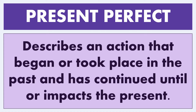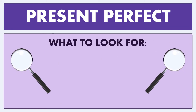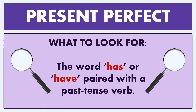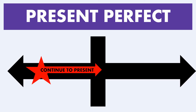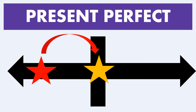Now let's look at the present perfect. This describes an action that began or took place in the past and has continued until the present, or impacts the present. What to look for: the word 'has' or 'have' paired with a past tense verb. The present perfect is used both for events that began in the past and continue to the present, and for events that happened in the past and have an impact on the present.